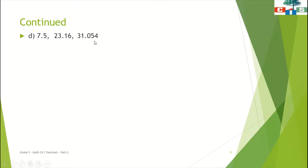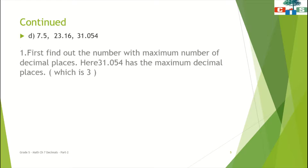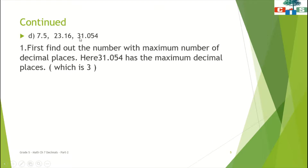The first step is that we have to find out the number with the maximum number of decimal places — maximum number of fractional parts. Here we can see that 31.054 has the maximum decimal places, which is 3. In 23.16 we have 2 decimal places and in 7.5 we have 1 decimal place. So obviously 31.054 has the maximum number of decimal places.